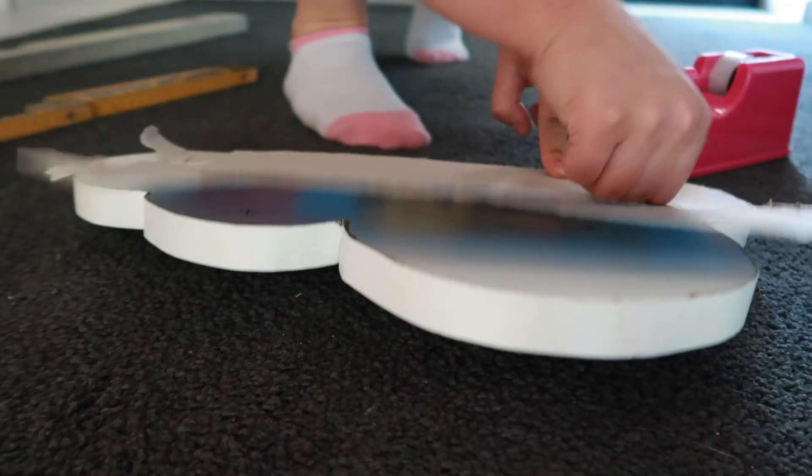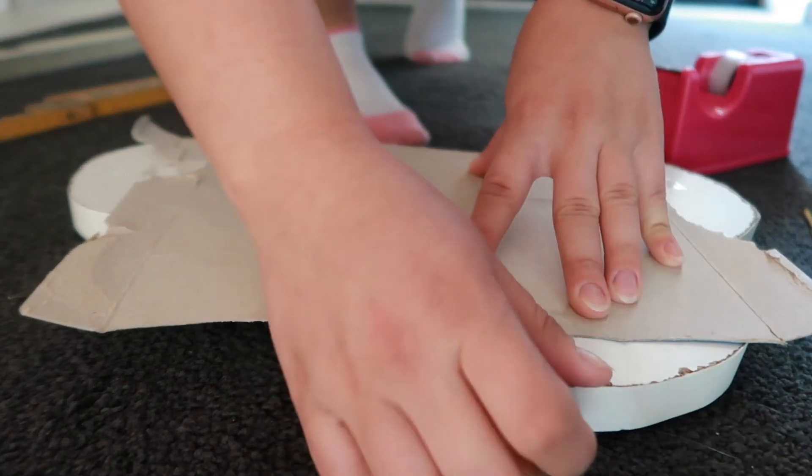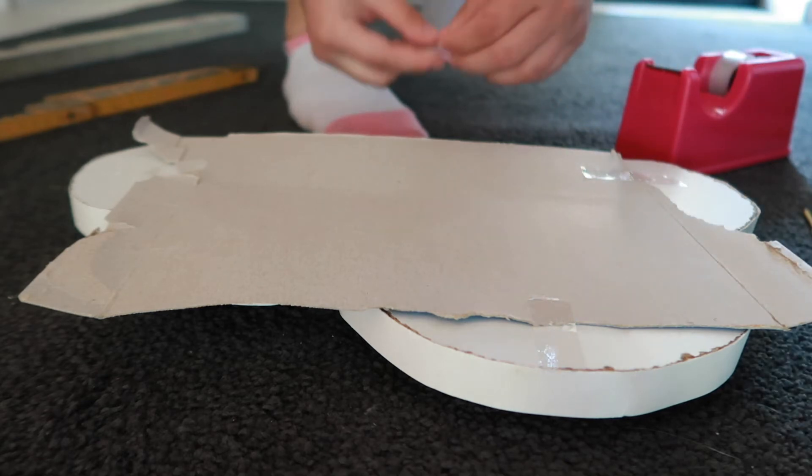Now it's time to drill two holes in the back of the cloud so I can hang it on the wall. I will use a piece of paper to make a stencil, then attach the paper to the wall and make the holes.